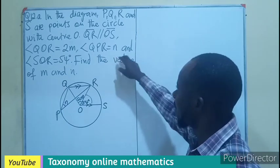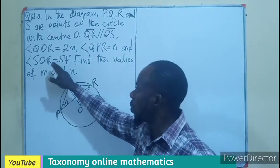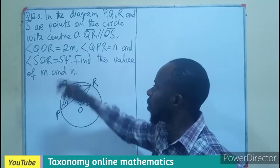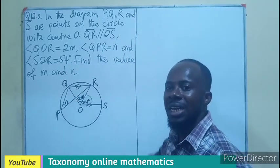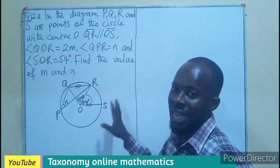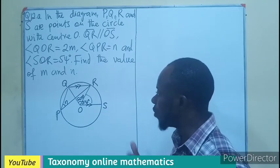The angle SOR is given as 54 degrees. We have to find the values of m and n. This is circle geometry, so we need to apply known theorems to solve this question.